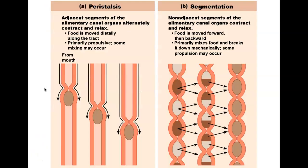We also have to discuss peristalsis and segmentation. We've talked about peristalsis before — basically an alternating series of contractions moving food away from the mouth. Think of it as north-to-south movement through the esophagus: this section contracts and the food moves down, then the next section contracts and the food moves down. They usually think of peristalsis as longitudinal movement.